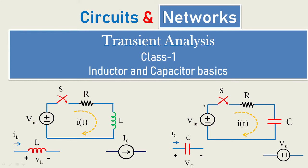When an inductor has current passing through it, it develops a voltage across it. Similarly, when a capacitor has current ic flowing through it, the voltage developed across it is vc. This is the indication of a current source and this is the indication of a voltage source. We are going to see how these equations relate to transient analysis and understand them with different waveforms in Class 1.